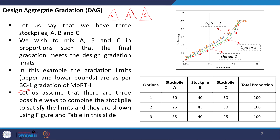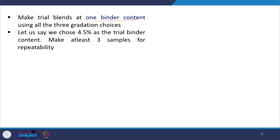The question is: which option should we select? We will perform a Design Aggregate Gradation to make a rational choice. The first step is to make trial blends at one binder content. It is important to realize that we are making samples using the three gradations at a single binder content. Let us say we choose 4.5 percent as the trial binder content. This trial binder content can be chosen by the engineer based on local experience and the type of mix targeted — it should be close to the anticipated optimum binder content.